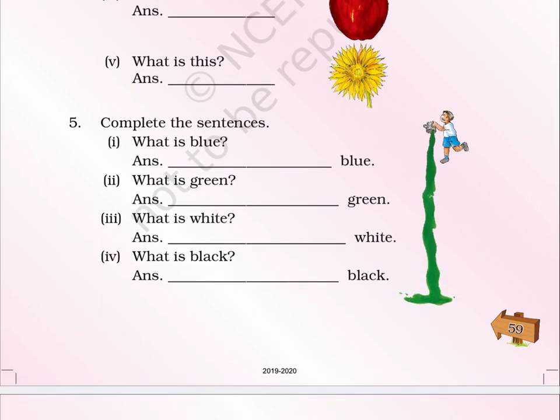5. Complete the sentences. 1. What is blue? Answer: ___ blue. 2. What is green? Answer: ___ green. 3. What is white? Answer: ___ white. 4. What is black? Answer: ___ black.